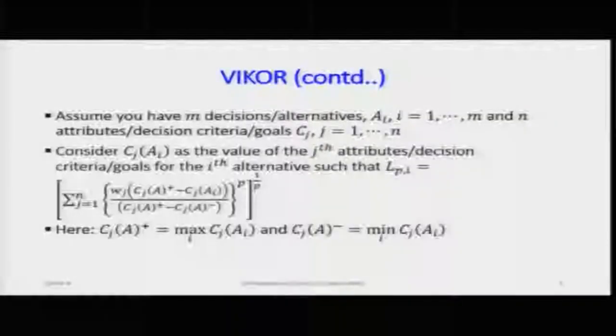In almost all MCDM methods — whether AHP, TOPSIS, ELECTRA, or specifically VICOR — we consider the attributes as the main quality based on which we analyze each alternative against the others corresponding to the criteria. The VICOR method is simple in that even if the units for attributes are different, we can bring some semblance of comparison between criteria despite differing units.